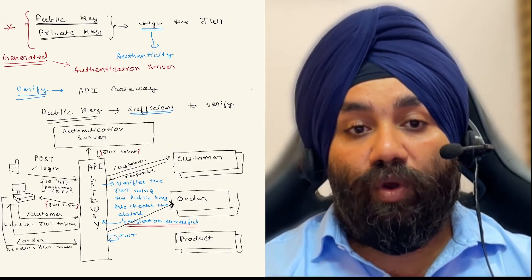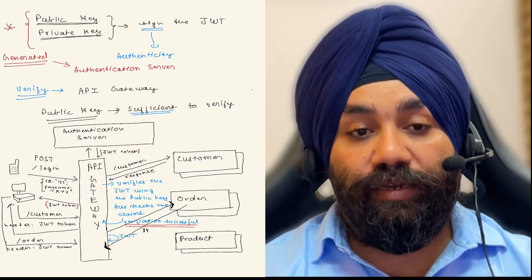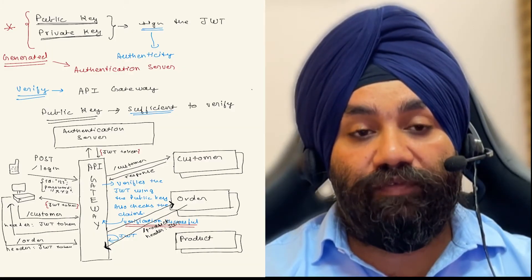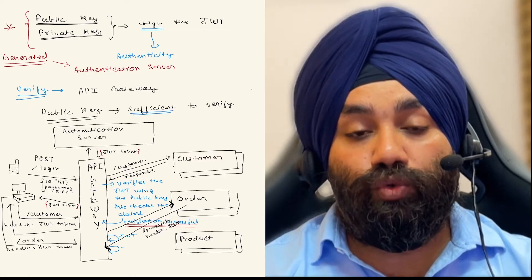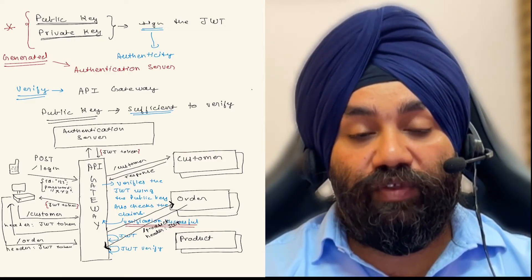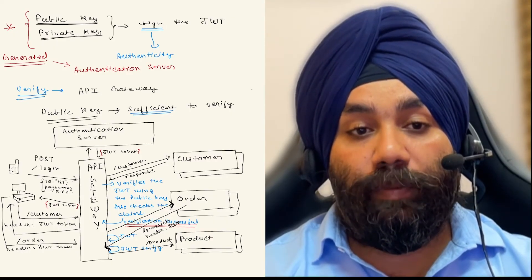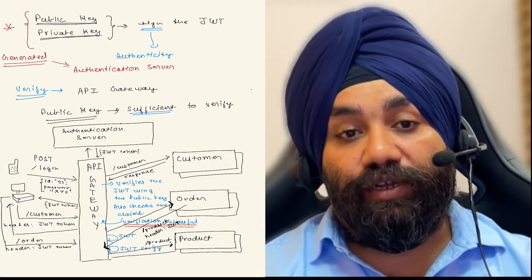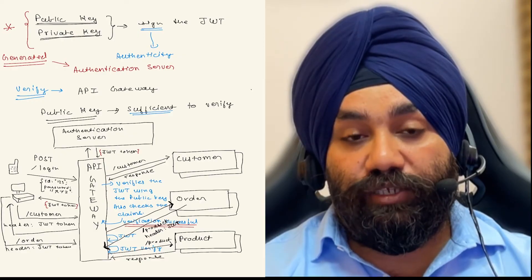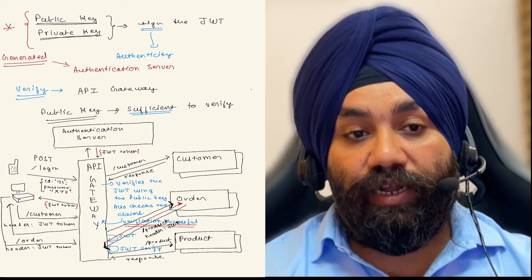So suppose now that the order service requires to call the product service. Again, the order server will hit the API gateway URL of the product service. And then, again, re-verification of JWT happens whether this JWT has access to the product service or not. And after the verification has happened, the product service will get called. And the response will be returned to the API gateway, which will then be returned to the order service and which will collate the responses of its own and product service and return to the end client.